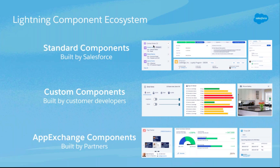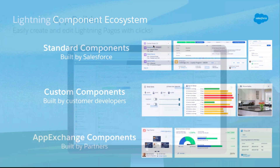These components can come from a variety of sources. There are standard Salesforce components built in and ready to go. You can also build your own custom components — a combination of HTML-like markup, JavaScript, and a little CSS, though the Salesforce Lightning Design System handles most of that. And our AppExchange partners are now building lightning components — at last count there are over 170 packages of components available that you can directly install from AppExchange. From within App Builder you can even go directly to AppExchange to install those components.